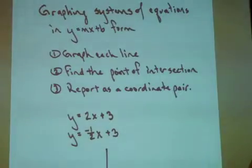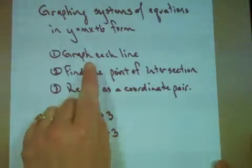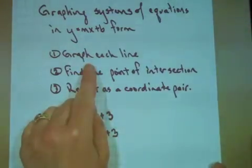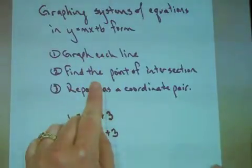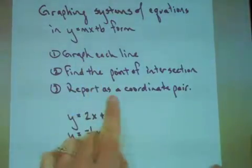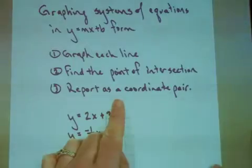Let's graph systems of equations which are written in y equals mx plus b form and find their point of intersection. There's three key steps. First you need to graph each of your lines. Then you need to find the point of intersection. And the last thing you need to do, which is what most students forget, is that you have to report that point of intersection as a coordinate pair. Let's try it.